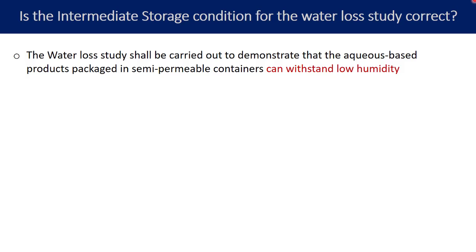First, understand why water loss will happen and why water gain will not happen. You need to understand something called the concentration gradient. If you have two separate systems and one system has a higher concentration of a given solute and the other has a lower concentration, the flow of the solute is going to happen from higher concentration towards lower concentration because of the concentration gradient.